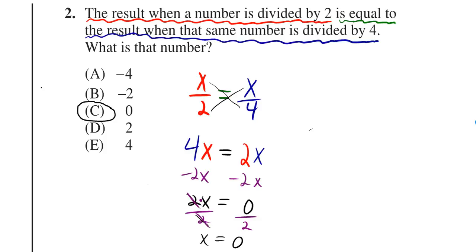In fact, they cancel down to 1, and 1 times x is just x, so you're just left with x, and then 0 divided by 2 is 0, so the answer is 0.